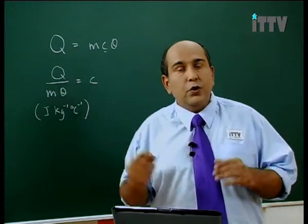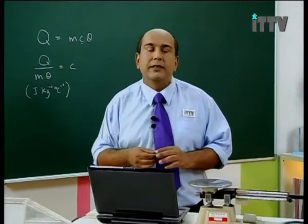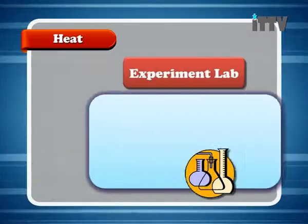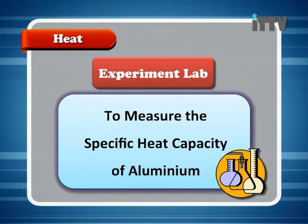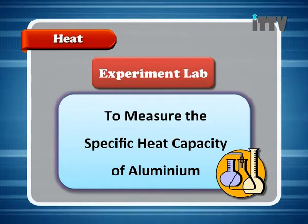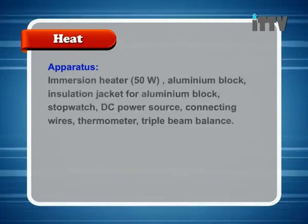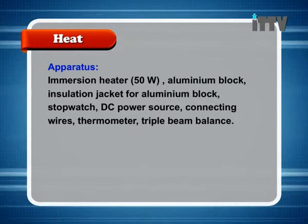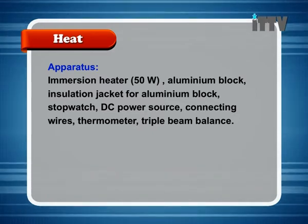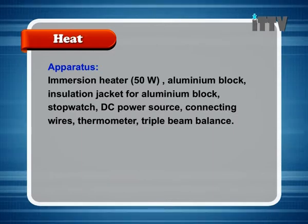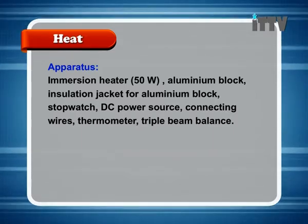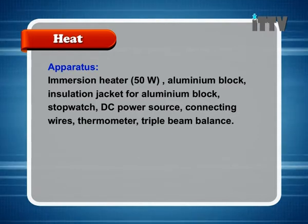Let's go through an experiment where we find the specific heat capacity for a specific substance. Aim: To measure the specific heat capacity of aluminium. Apparatus: immersion heater 50 watt, aluminium block, insulation jacket for aluminium block, stopwatch, DC power source, connecting wires, thermometer, and triple beam balance.